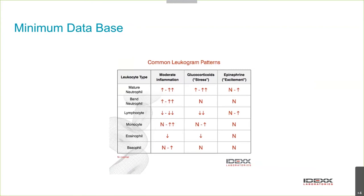When looking at white cells, we look at patterns. The excitement leukogram — the effect of adrenaline — causes neutrophils and lymphocytes to go up a little; that's the patient that got anxious in the waiting room. A stress leukogram is different — it takes at least four to six hours to develop and reflects glucocorticoids, excess cortisol, or underlying illness causing metabolic stress. The hallmarks are lymphopenia, eosinopenia, and usually a mild neutrophilia.